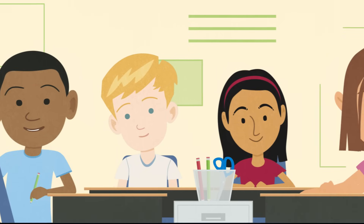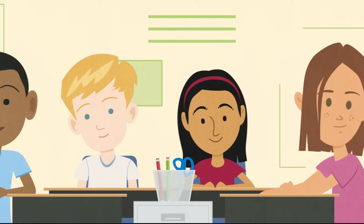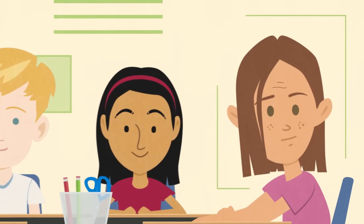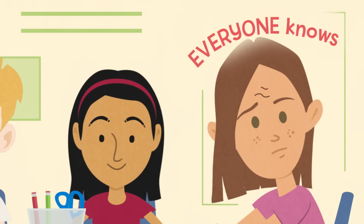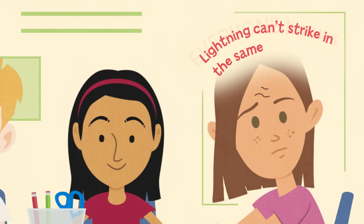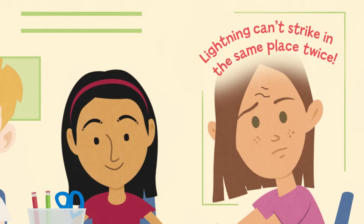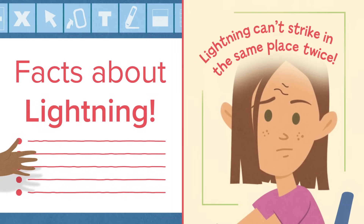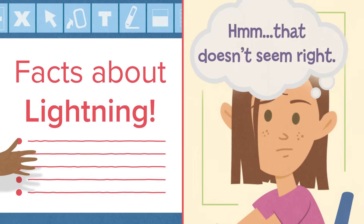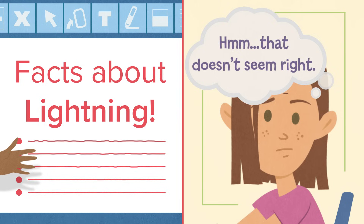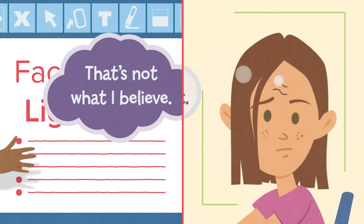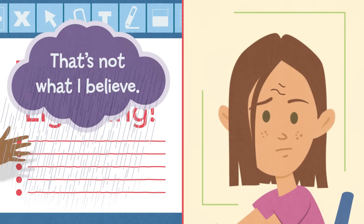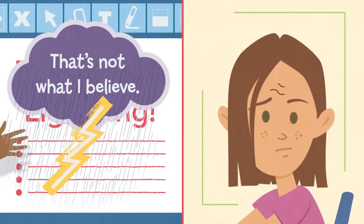Only some of the things the teacher is saying don't line up with what Anika believes about lightning — like that everyone knows lightning can't strike in the same place twice. And the more the conversation continues, the more thoughts like 'that doesn't seem right' or 'that's not what I believe' creep in and threaten to wash out this day's learning.